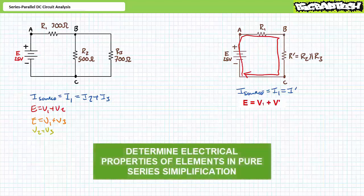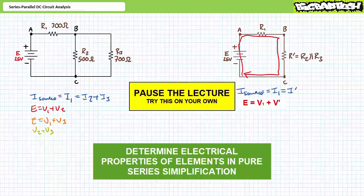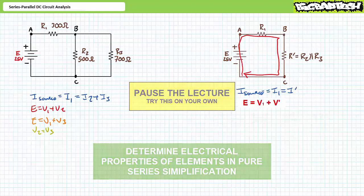As an exercise to the viewer, I invite you to solve for V1, V single prime, I source, I1, and I single prime for the series simplification only. Once you've got these values, we'll map the properties back to our original series-parallel circuit. If you're tracking, you should have obtained the following results. The parallel combination of R2 and R3 results in simplification R single prime having a value of 291.7 ohms.